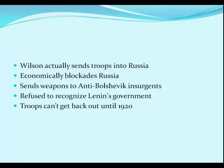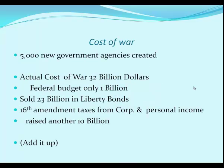Meanwhile, Wilson actually sent American troops into Russia and economically blockaded Russia, refusing to recognize the communist government. He was sending weapons to anti-Bolshevik insurgents — the White Army, which was the Czar's army — because the Bolsheviks were the Red Army. Those troops had a terrible time getting back and didn't leave until 1920, while Russia protested having troops on their soil. The cost of the war: more than 5,000 new government agencies were created. The actual dollar cost was 32 billion dollars in 1917-18 money. Meanwhile, 23 billion in liberty bonds were sold, and the 16th Amendment allowed taxing corporate and personal income. We actually made money on that war and came out way ahead.